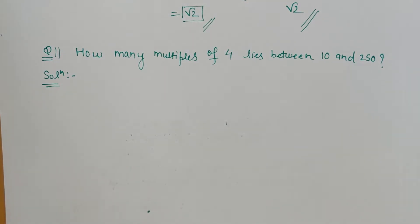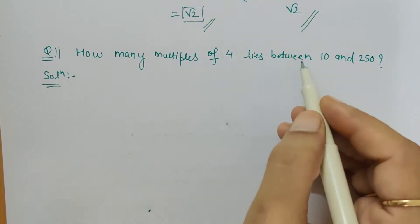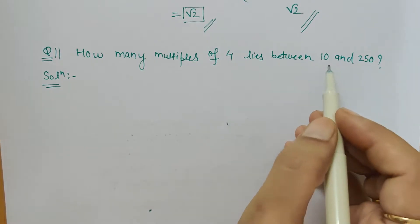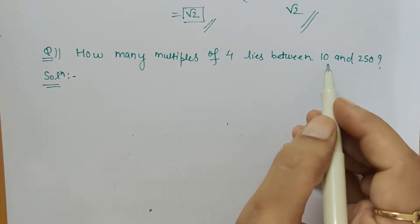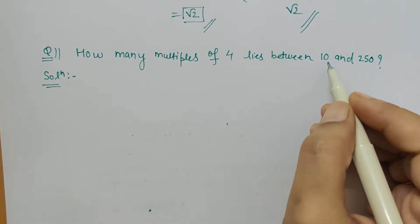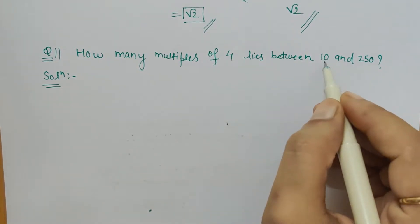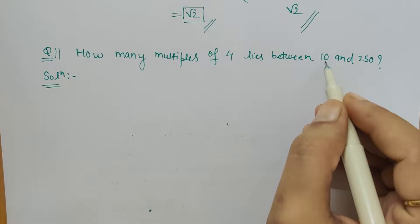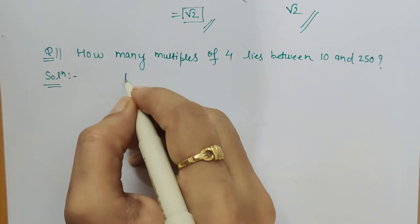Hello friends, let's solve this question: how many multiples of 4 lies between 10 and 250? First, we have to start writing the numbers which are divisible by 4 between 10 and 250. 10 is not divisible by 4, so what is the next number which is divisible by 4? 11 is also not divisible, so 12 is divisible, so we will write 12.